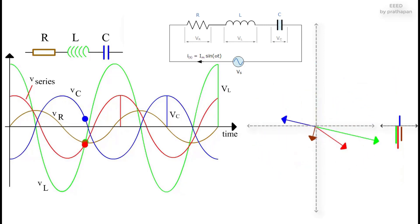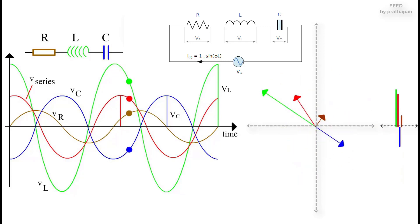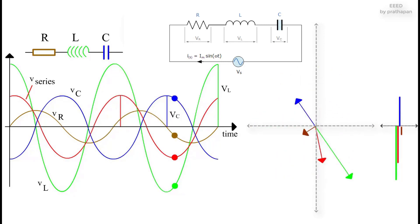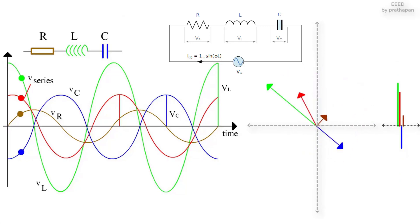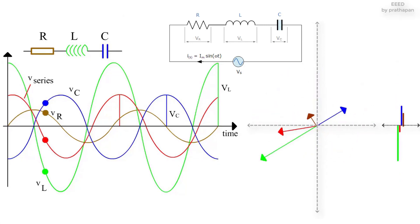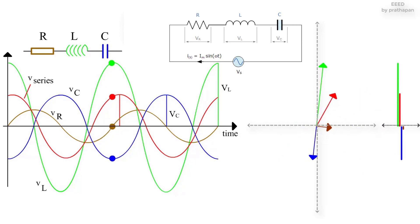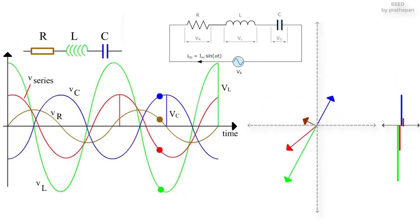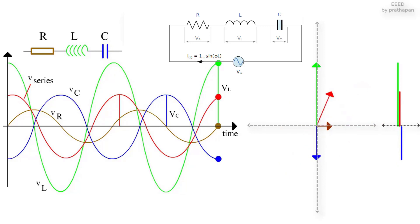In a pure ohmic resistor the voltage waveforms are in phase with the current. In a pure inductance the voltage waveform leads the current by 90°, giving us the expression of ELI. In a pure capacitance the voltage waveform lags the current by 90°, giving us the expression of ICE.